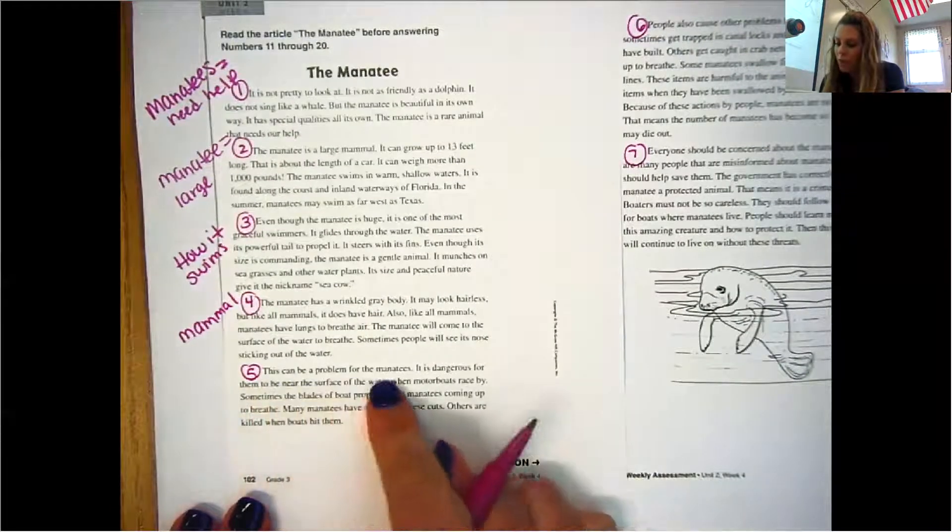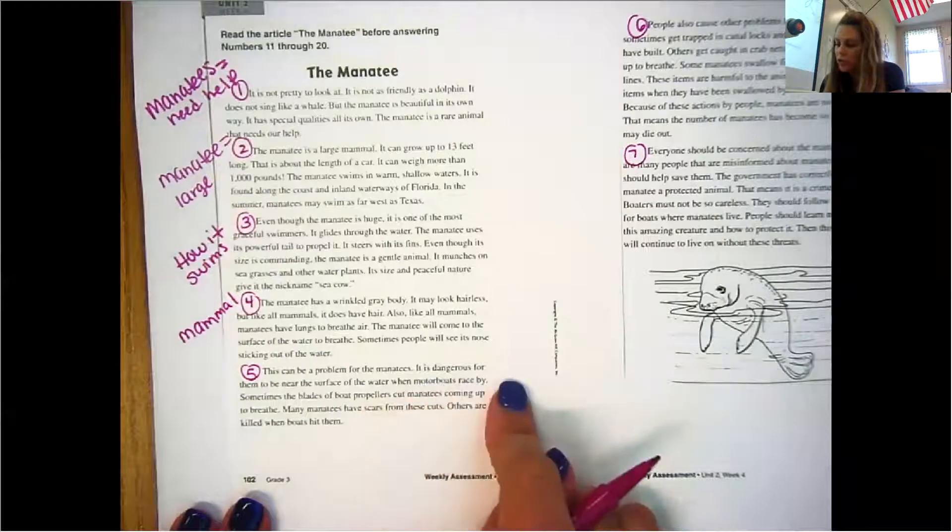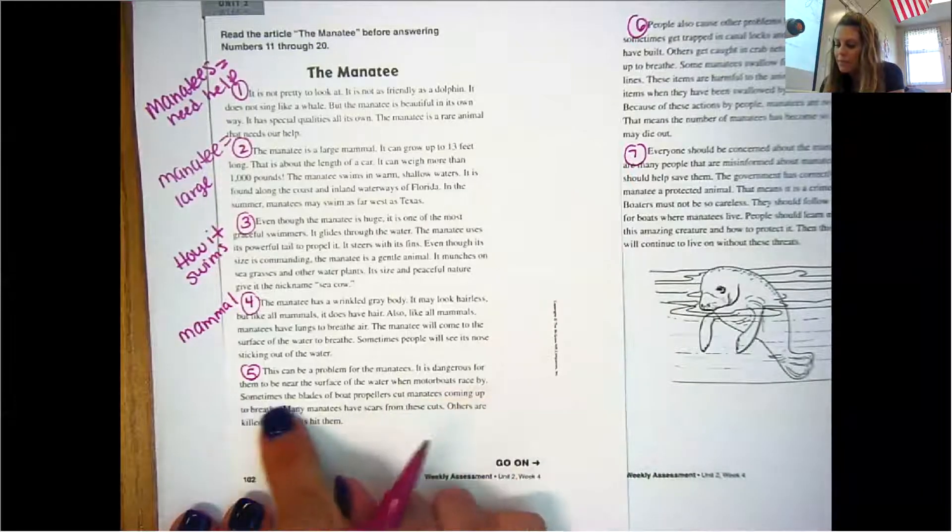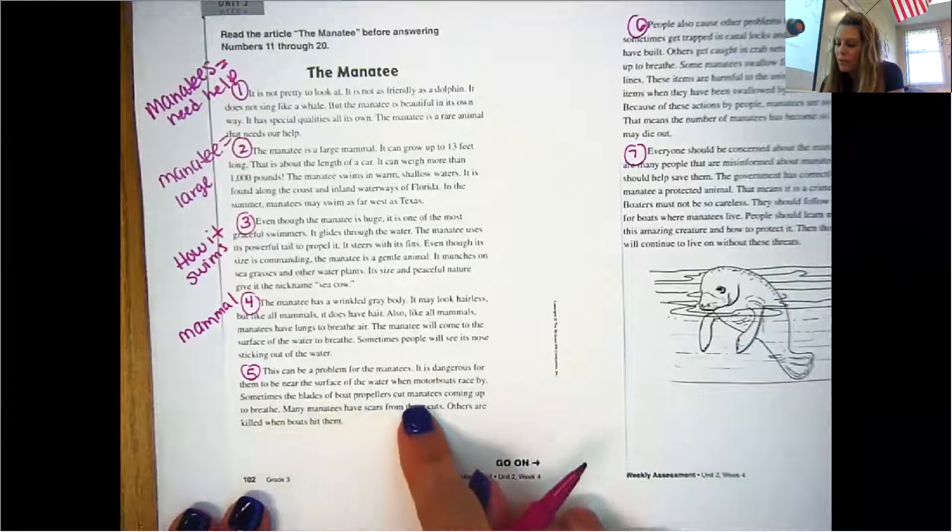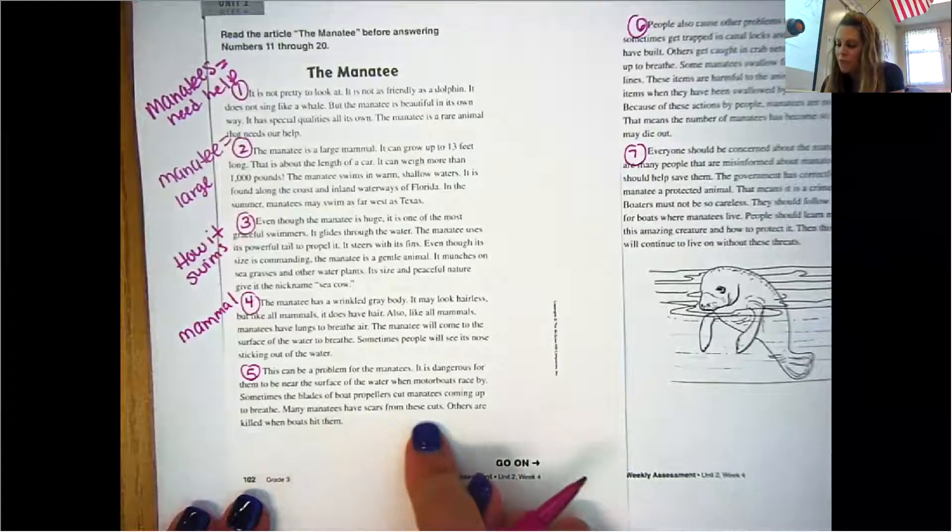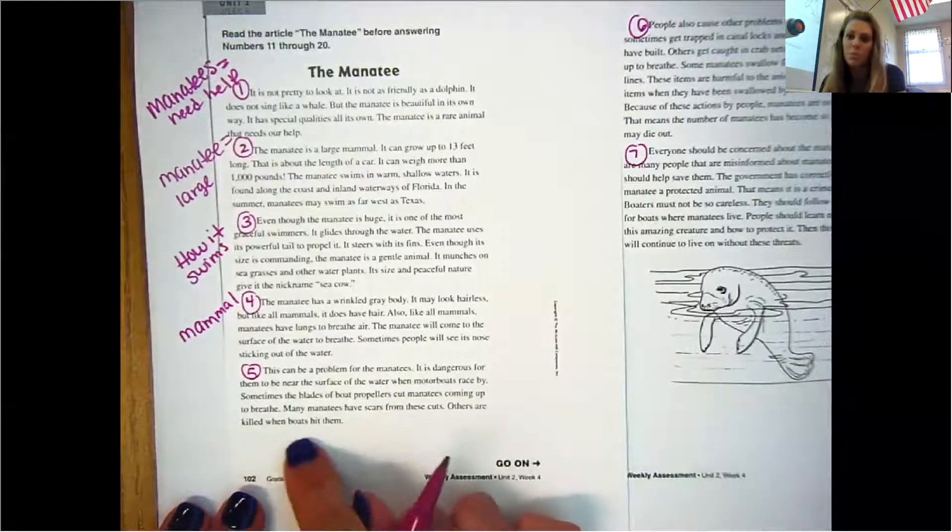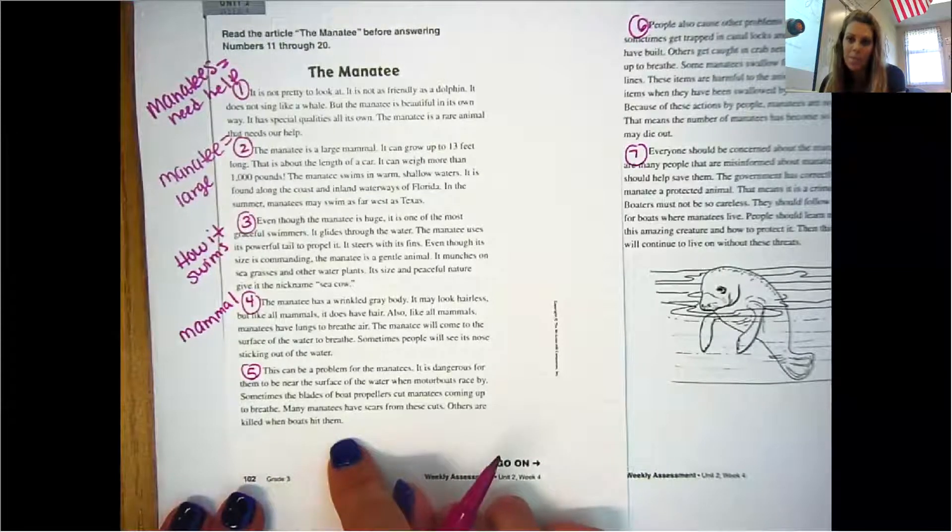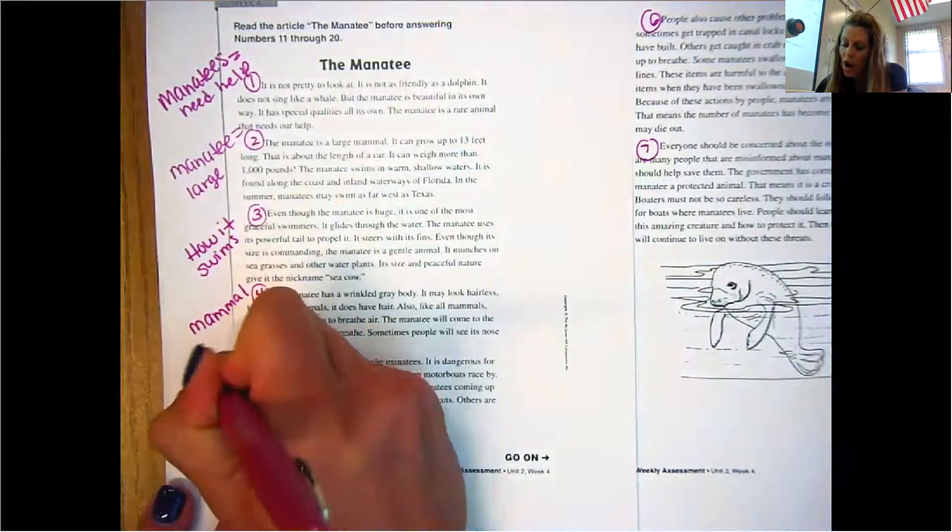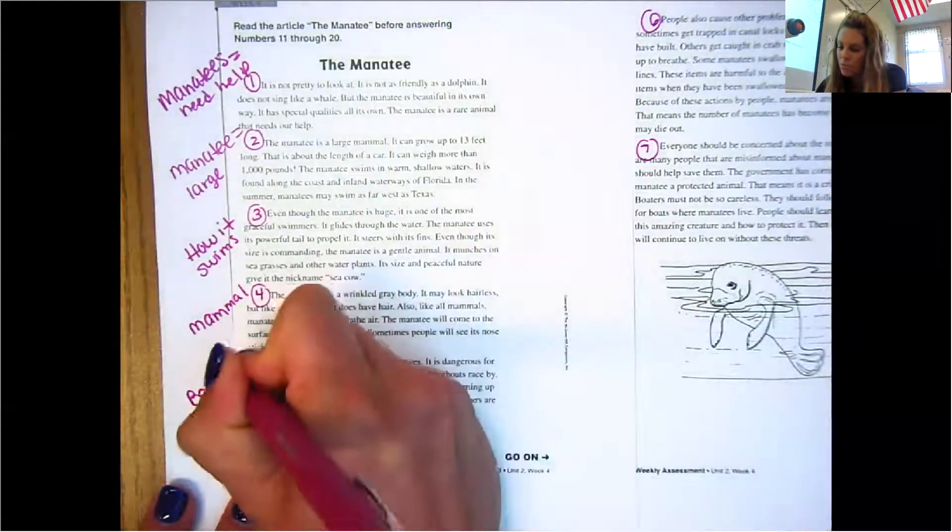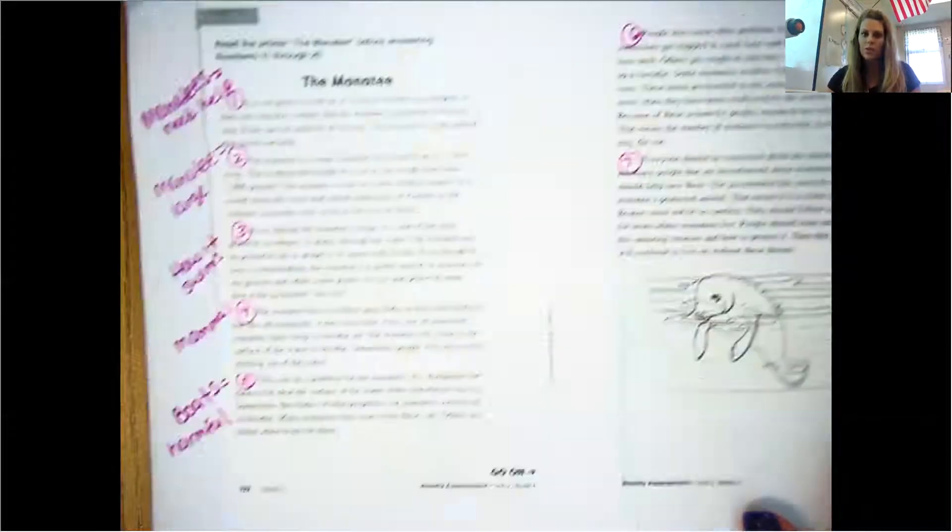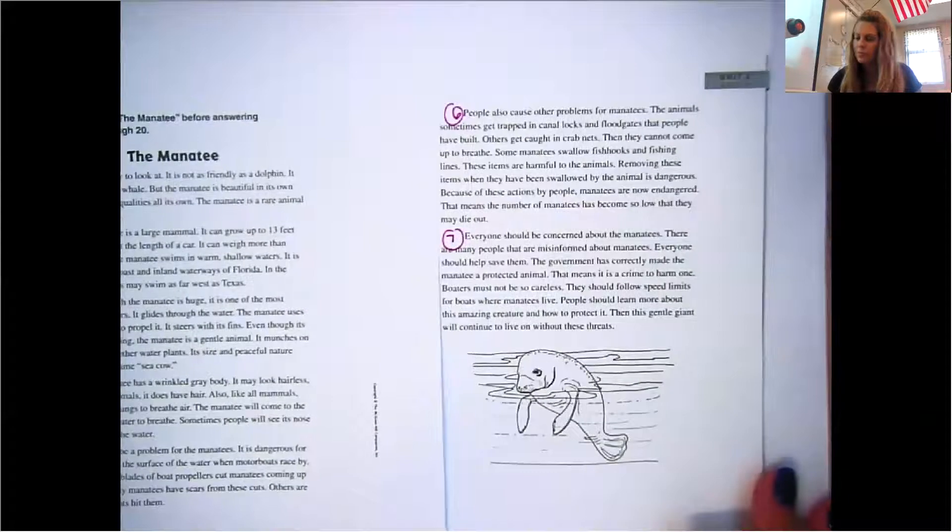All right, this can be a problem for the manatees. It is dangerous for them to be near the surface of the water when motor boats race by. Sometimes the blades of boats propellers cut manatees coming up to breathe. Many manatees have scars from these cuts. Others are killed when boats hit them. Something about boats and being harmful would have been a great little bit of words to write. Boats equals harmful. Okay? All right, so let's go ahead and look at our next two paragraphs.